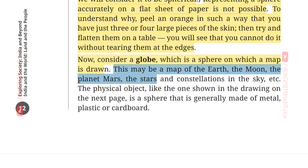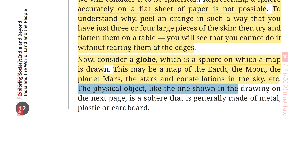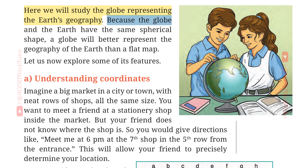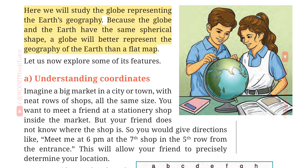A globe map may represent the Earth, the Moon, the planet Mars, the stars and constellations in the sky, etc. The physical globe is generally made of metal, plastic or cardboard. Here we will study the globe representing the Earth's geography. Because the globe and the Earth have the same spherical shape, a globe will better represent the geography of the Earth than a flat map. Let us now explore some of its features.